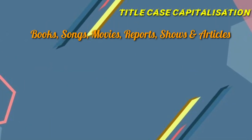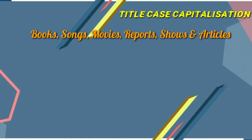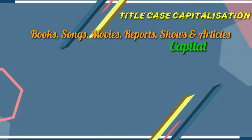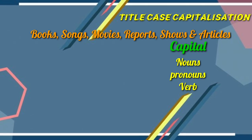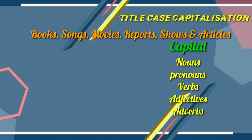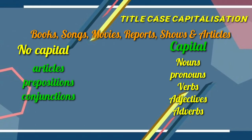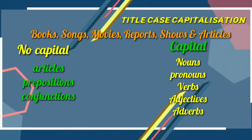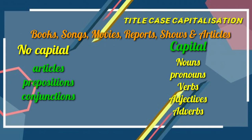Rule twelve: title case capitalization — used for books, songs, poems, movies, reports, shows, and articles. In this format, we usually capitalize nouns, pronouns, verbs, adjectives, and adverbs. We do not capitalize articles (a, an, the), prepositions (on, in, up, down), or conjunctions (and, but, or), etc. These are usually not capitalized.